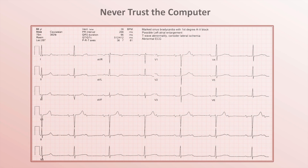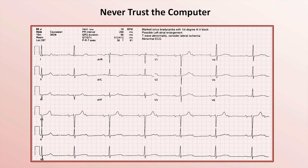Consider this EKG for a moment. It was taken of a patient who showed up to a pre-op clinic prior to an elective orthopedic procedure. He was seen by an anesthesia resident who looked at the EKG and copied the computer's diagnosis of sinus bradycardia with first-degree AV block into the chart before clearing the patient for surgery. After all, asymptomatic sinus bradycardia and first-degree AV block are rarely causes for concern.